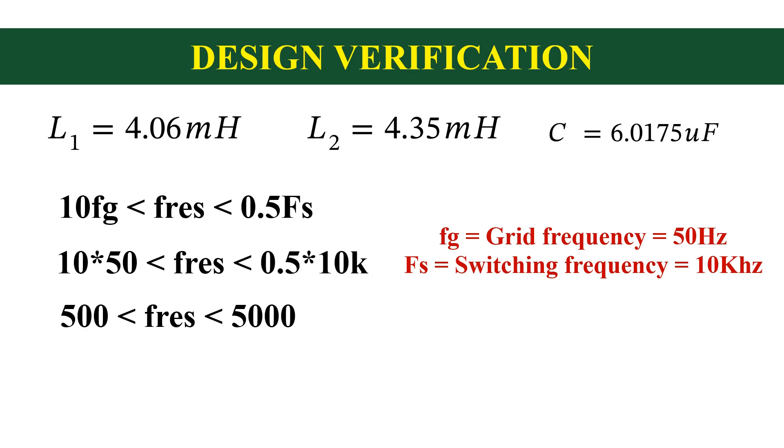Equation for resonance frequency is given by f resonance is equal to 1 by 2 pi into root of L1 plus L2 divided by L1 L2 C. Substitute the values of L1 L2 and C in this equation. We will get resonance frequency as 1415.88 hertz.